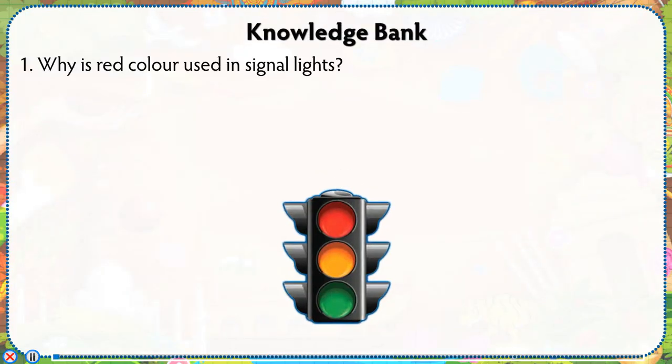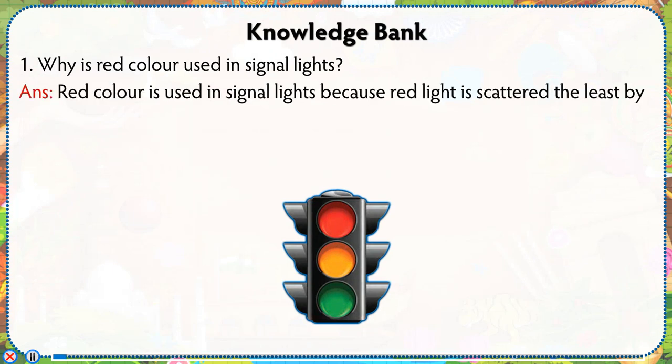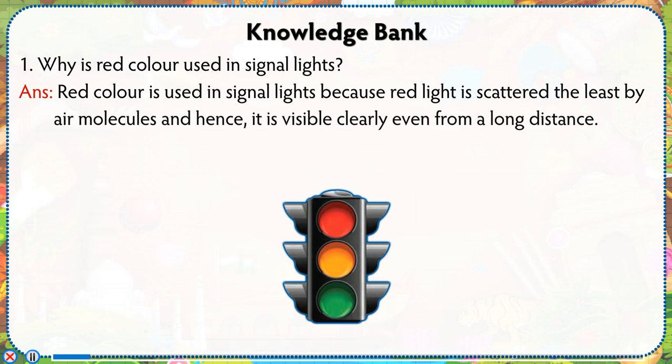Knowledge Bank: Why is red color used in signal lights? Red color is used in signal lights because red light is scattered the least by air molecules, and hence it is visible clearly even from a long distance.